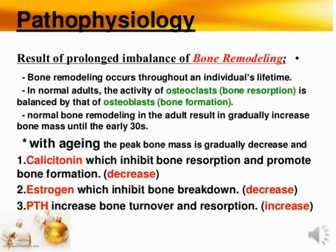Bone remodeling occurs throughout an individual's lifetime — it is a lifelong process. In the normal adult, the activity of osteoclasts, meaning bone resorption, is balanced by osteoblasts, meaning bone formation. Normal bone remodeling in adults results in a gradual increase in bone mass until the early thirties. This process is first altered before osteoporosis occurs.